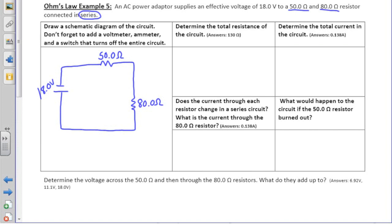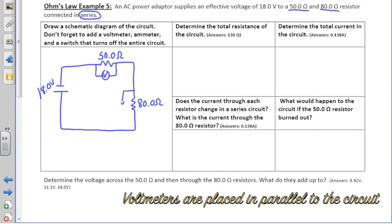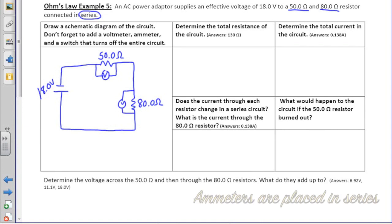It's always important to label everything in your diagram to make sure you haven't missed any information from the question. Voltmeter, ammeter, and a switch that turns off the entire circuit. A voltmeter is always connected in parallel to the circuit around each resistor. Because an ammeter measures current, we always put it in series with the circuit itself.